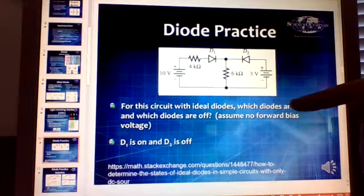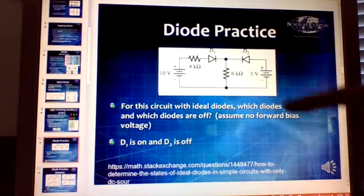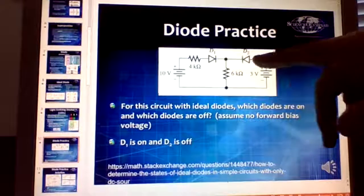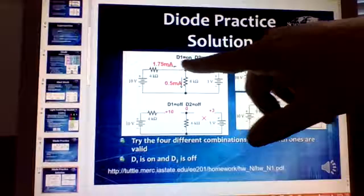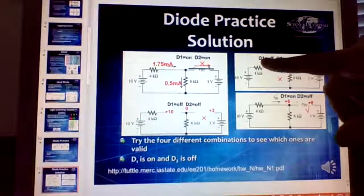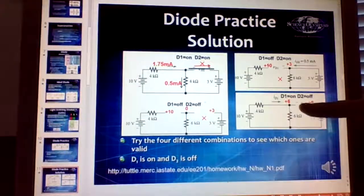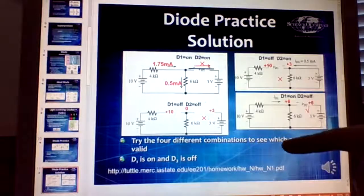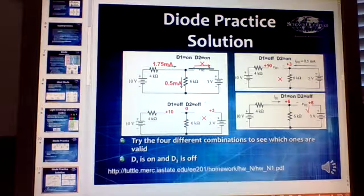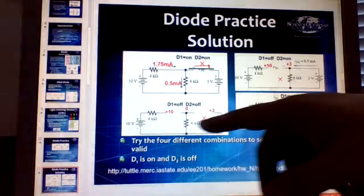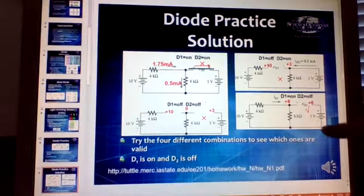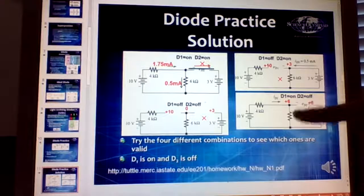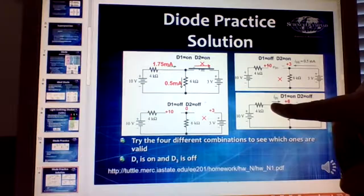For a diode circuit problem, the easiest way to solve it is to pretend you don't know if each diode is turned on or off, and solve for all four potential conditions: both on, D1 off and D2 on, both off, and D1 on and D2 off. After solving all four, you'll find that only one scenario makes mathematical sense — in this case, D1 is off and D2 is on.